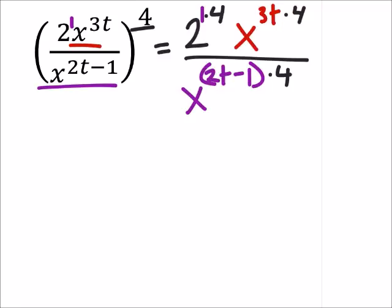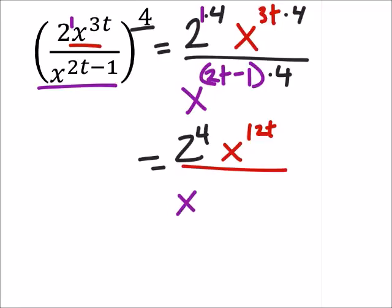So this gives us 2 to the power of 4 times x to the power of—3 times 4, three t's would give us 12t—all divided by x to the power of, we can distribute this 4 by the way, 8t minus 4.